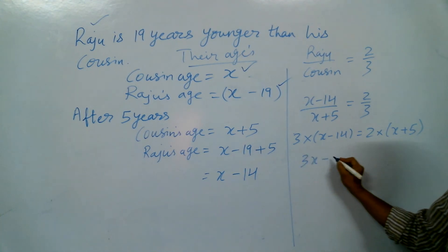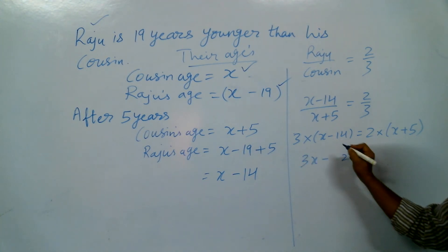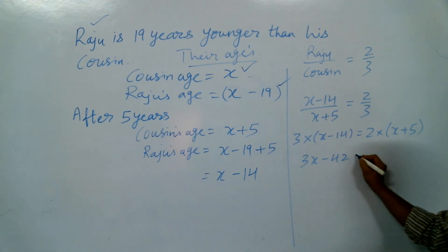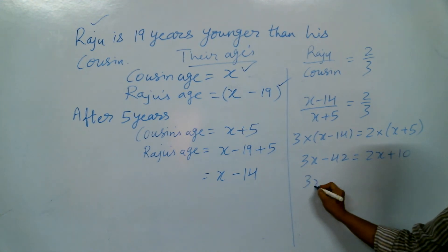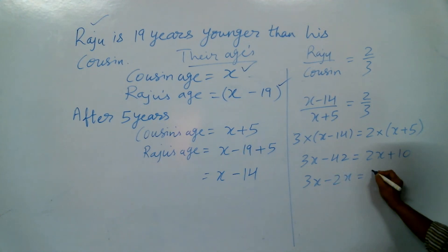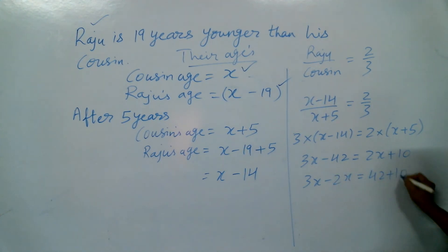So we have 3x minus 42 equals 2x plus 10. Now 3x minus 2x, and 42 plus 10.